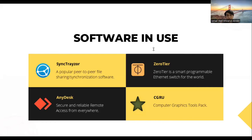Next is AnyDesk. AnyDesk is a secure and reliable remote access tool from everywhere. This software helps us to get faster configuration of the network, remote files, etc. Next is about Cigrew. In Cigrew, we use Cigrew to build the render farm.